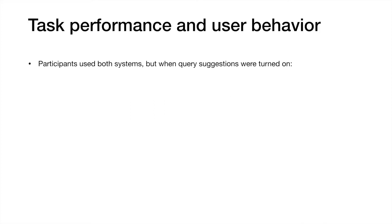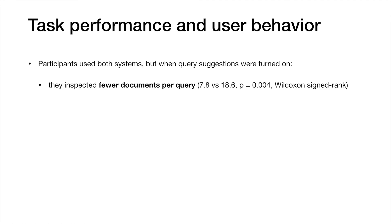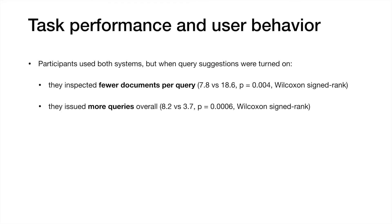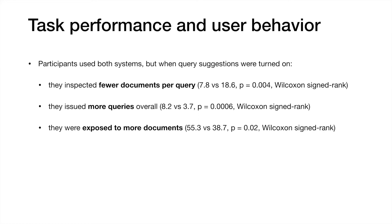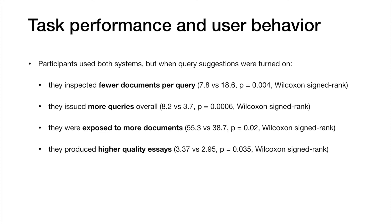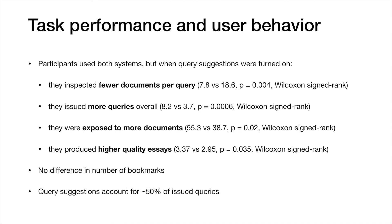In terms of task performance, when using the system with query suggestions, participants inspected far fewer documents per query, issued more search queries overall, and in aggregate were exposed to more documents — even though search sessions took the same amount of time. We believe that because they were exposed to more documents, they went on to produce higher quality essays than users of the system without query suggestions. There was no significant difference in the number of documents bookmarked, and query suggestions accounted for approximately half of the queries issued overall.